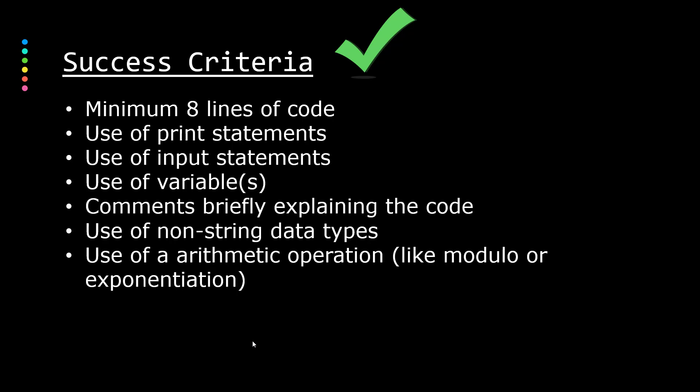To help guide you toward how we can solve this — the goal here is not to create a chatbot you can sell to Apple or Amazon, but to practice the skills. Here are some success criteria: at least eight lines of code, use print statements, input statements, and variables — preferably more than one. Have some comments which explain the code, that's a good habit to get into. And try to use some non-string data types — numbers, integers, and floats — in arithmetic operations, including more advanced ones like modulo or exponentiation.